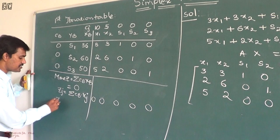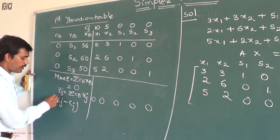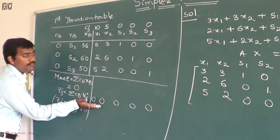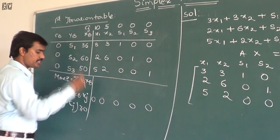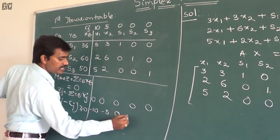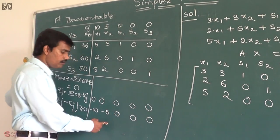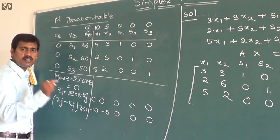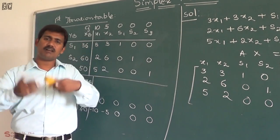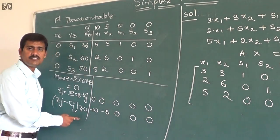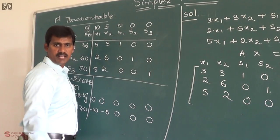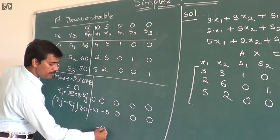Finally, we check the optimality condition: zj minus cj greater than or equal to 0. We get: 0 minus 10 = minus 10; 0 minus 5 = minus 5; 0 minus 0 = 0; 0 minus 0 = 0; 0 minus 0 = 0. The condition is not satisfied here, so we need to iterate further.